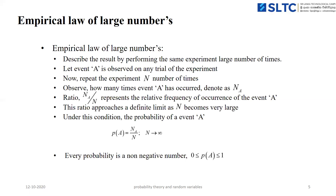Another property used in probability theory is the empirical law of large numbers. This describes the result by performing the same experiment a large number of times. We do this because by doing an experiment only one or two times, we can't predict the actual outcomes. We have to do the same experiment a large number of times so that we can come to a conclusion and predict the probability of the particular event.